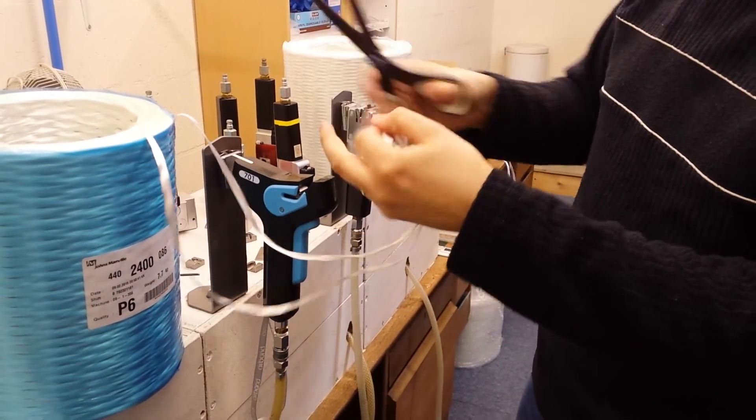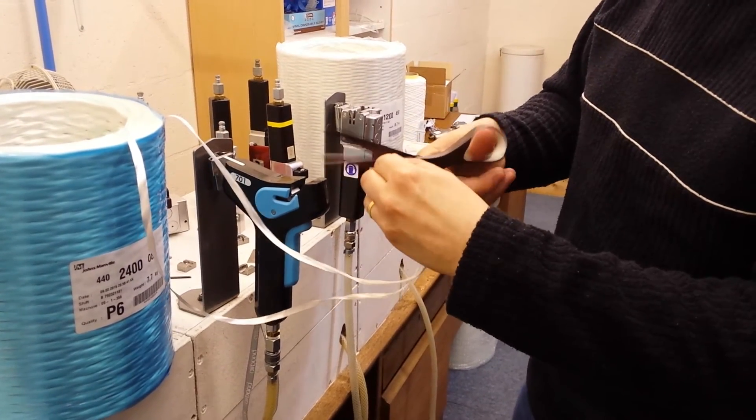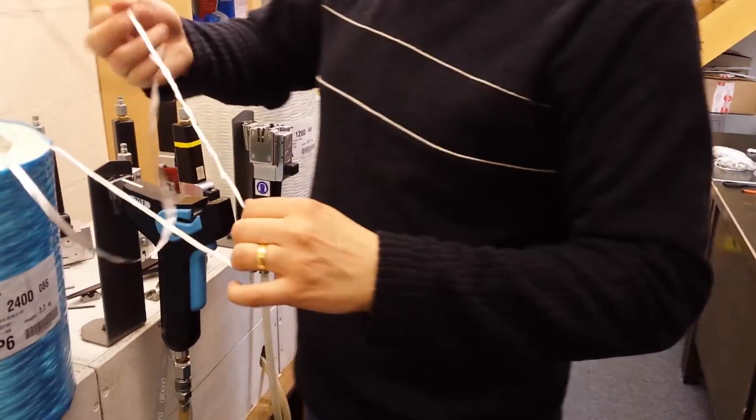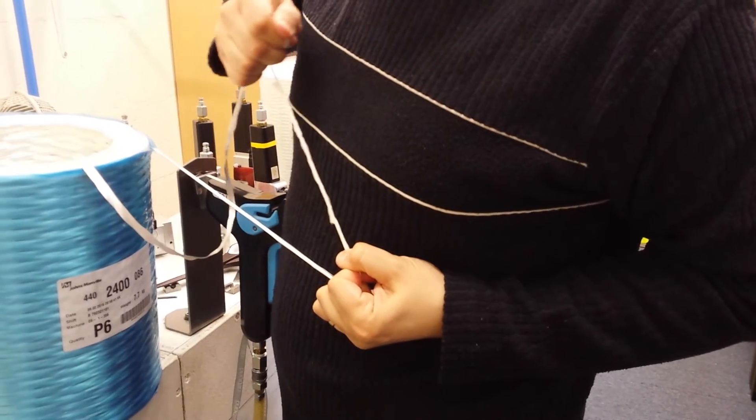You manually trim the tail ends away. I apologize about the phone. And then you're left with a very neat, strong joint.